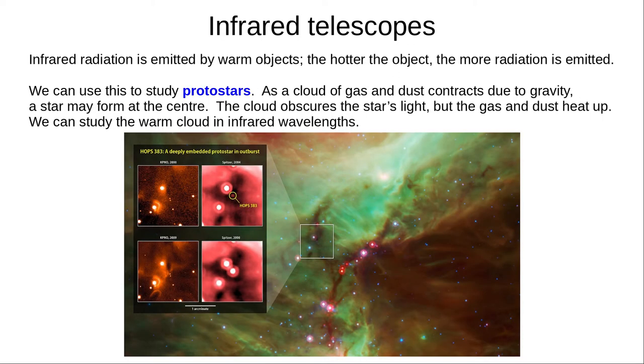Infrared radiation is emitted by warm objects. The hotter the object, the more radiation is emitted. We can use this to study protostars. As a cloud of gas and dust contracts due to gravity, a star may form at the centre. The cloud obscures the star's light, but the gas and dust heat up, and we can study the warm cloud in infrared wavelengths, usually with space-based telescopes such as Hubble.